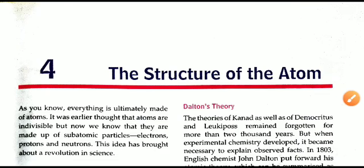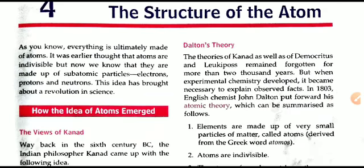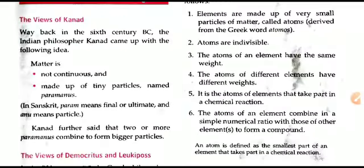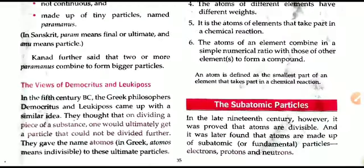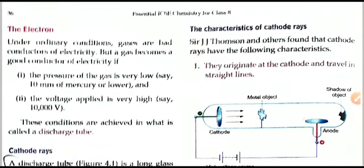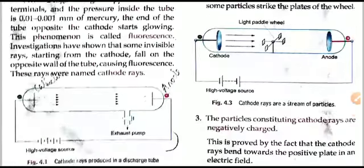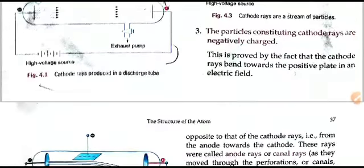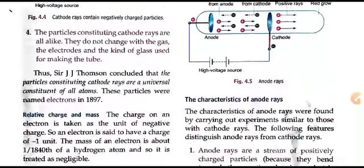Hello everyone, welcome to chemistry class. We have been discussing chapter four, the structure of atom. This is part three of the present chapter. In the previous video we already discussed about the cathode rays which constitute the electrons. In today's video we will continue with the remaining sub-atomic particles, that is the proton and the neutrons.